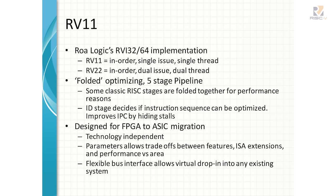The implementation itself is what we call a folded optimizing five-stage pipeline — not really a classic five-stage. Some classic RISC stages have been folded together in the same stage. 'Optimizing' means it's capable of absorbing stalls in the pipeline — for example, it can detect a dependency on memory accesses between a memory instruction and the next instruction, then swap those two instructions if there's no dependency, absorbing stalls. Most importantly, the CPU is designed for FPGA-to-ASIC migration: it performs well in an FPGA at 100–200 MHz, but is really intended for ASIC implementation.